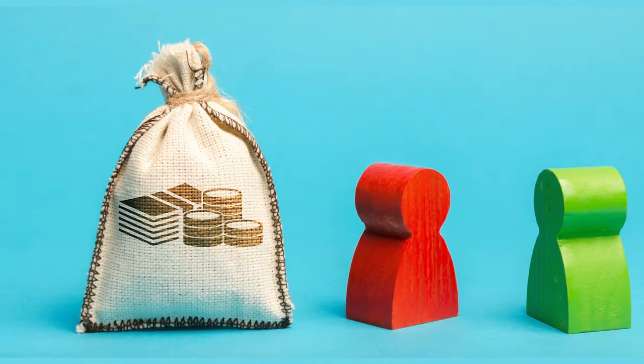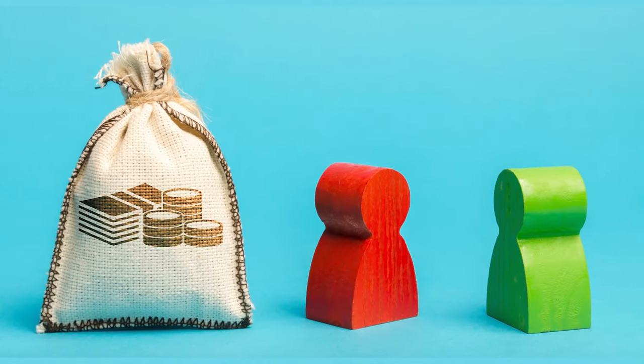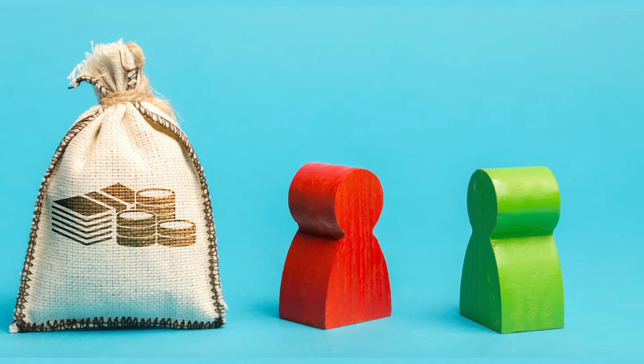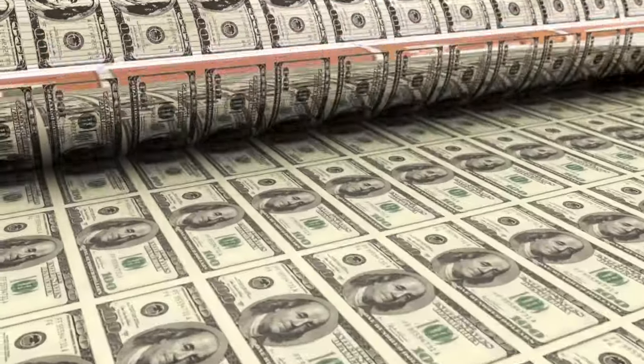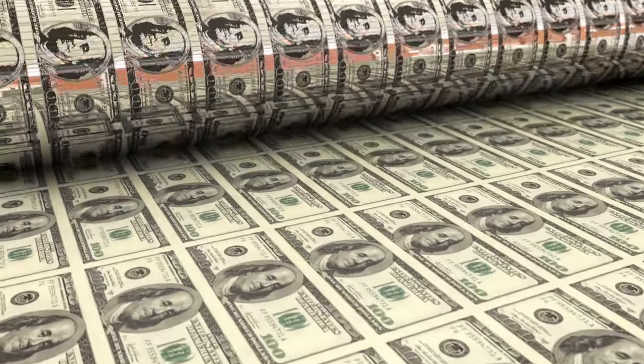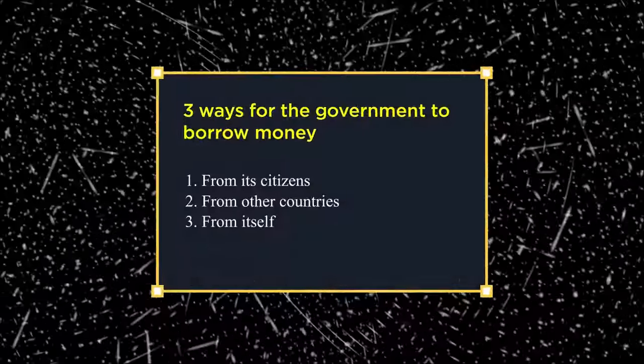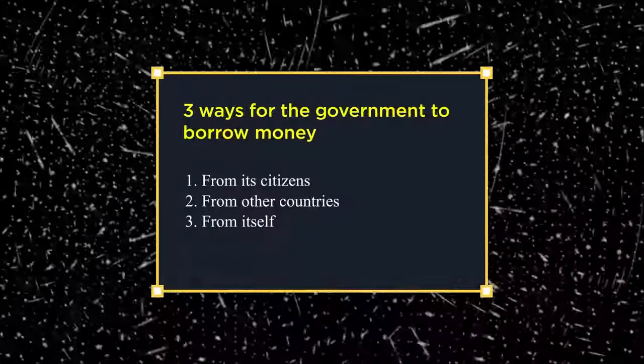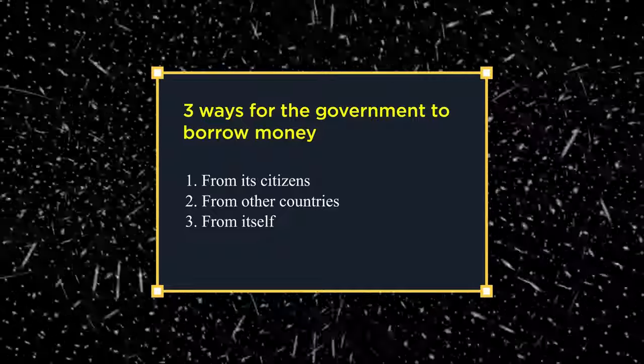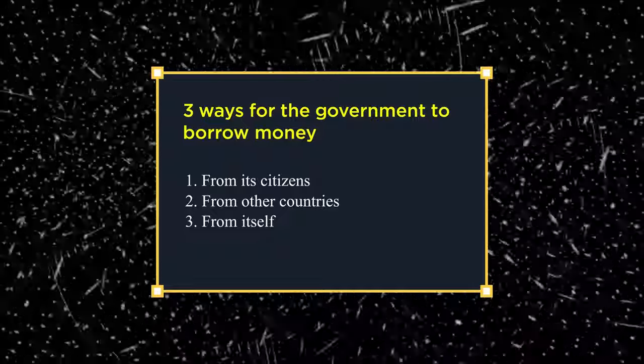To make up for this deficit, the government needs to borrow money, or perhaps even create money. There are three ways for the government to borrow money: from its citizens, from other countries, and from itself.